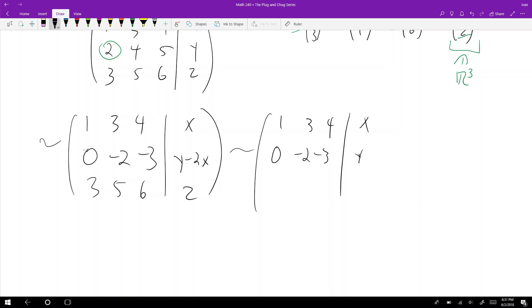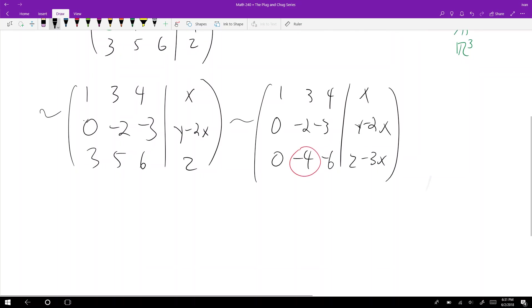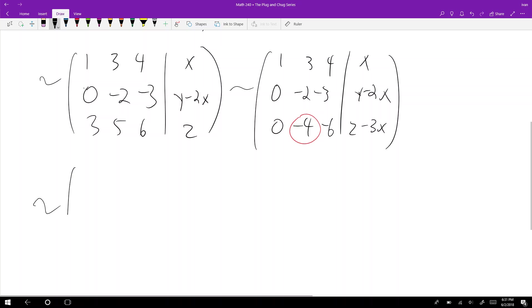This becomes [1 3 4 x; 0 -2 -3 y-2x; 0 -4 -6 z-3x]. Now we want to zero out the third row, second column. I'll do row 3 minus 2 times row 2, which gives [1 3 4 x; 0 -2 -3 y-2x; 0 0 0 z-3x-2(y-2x)].